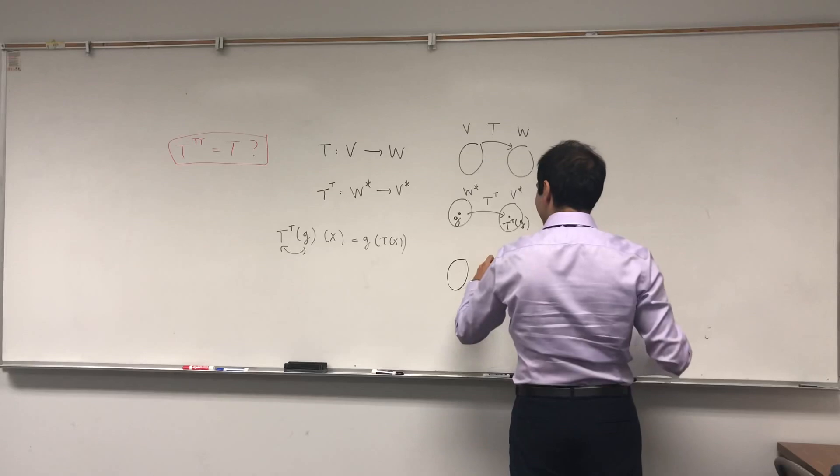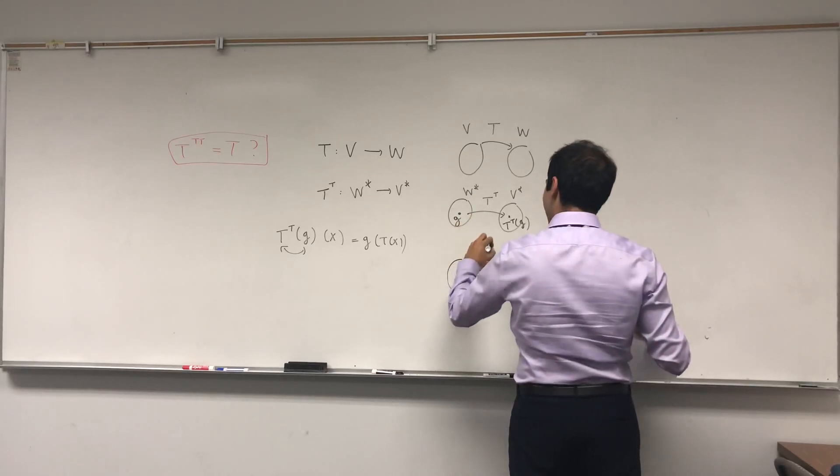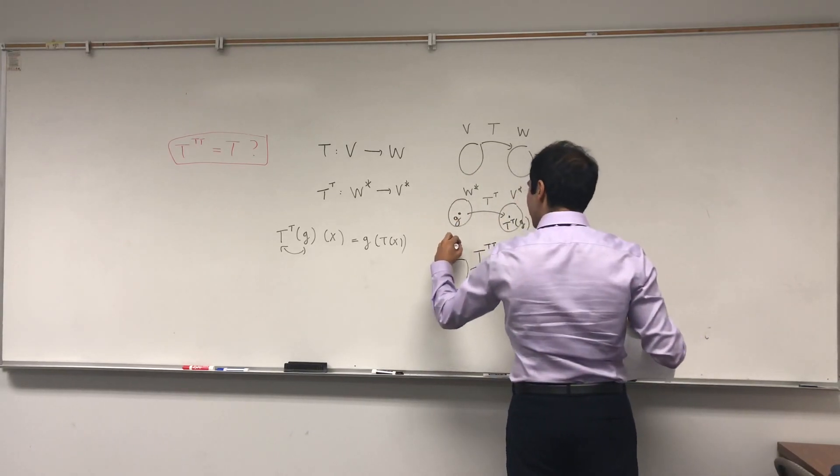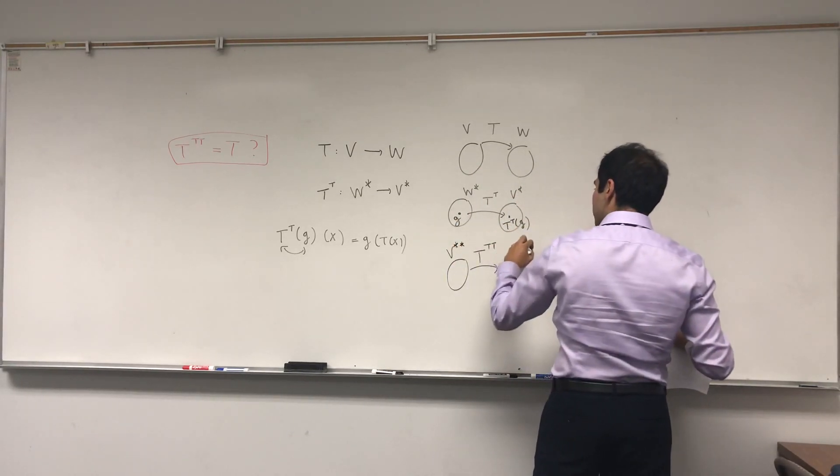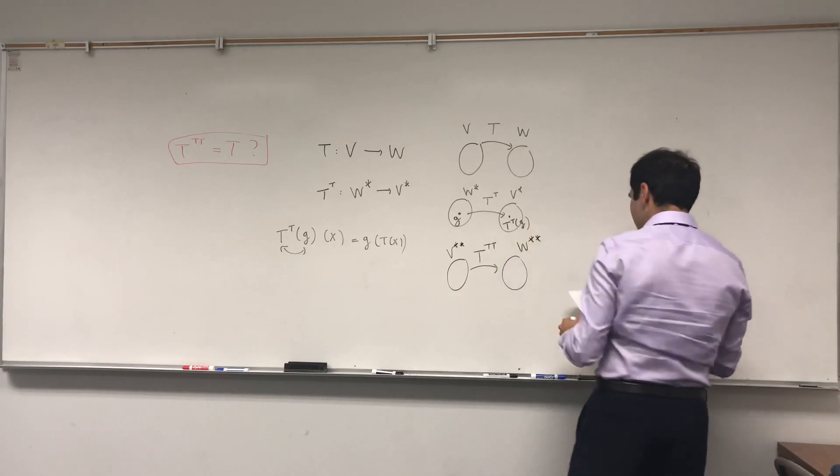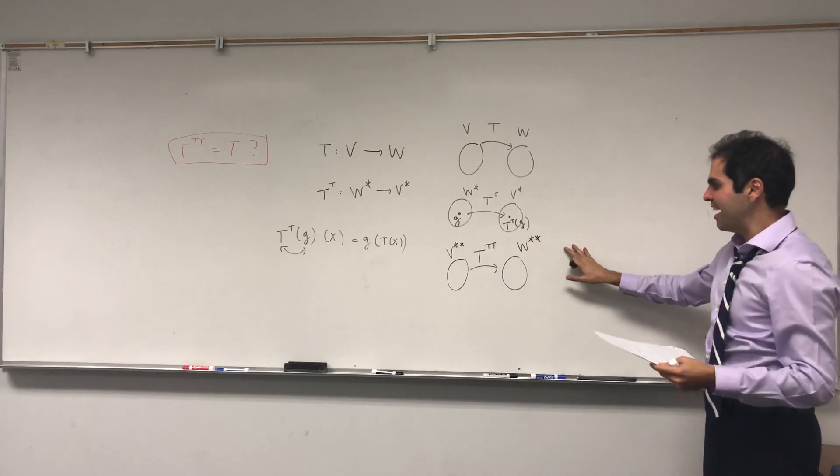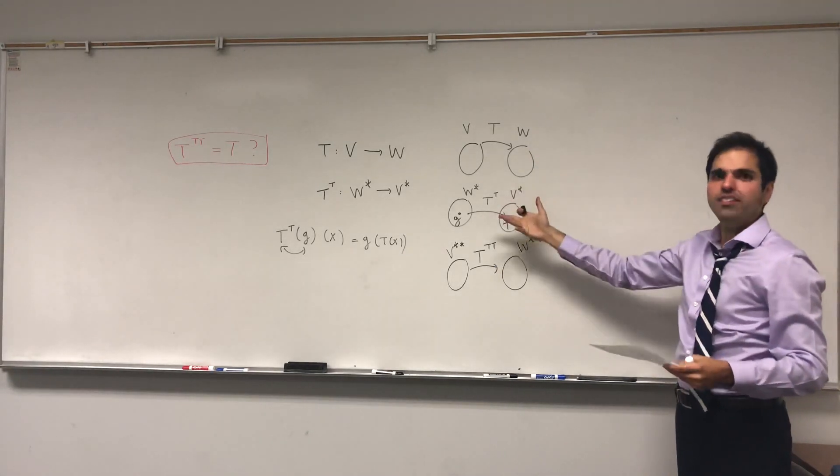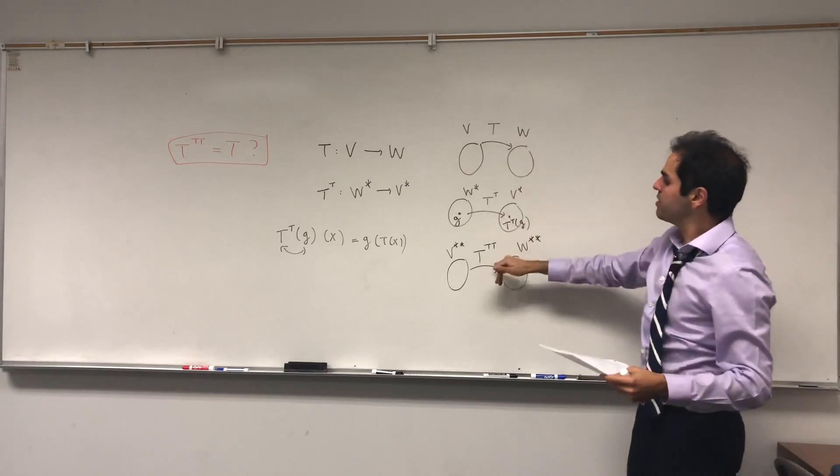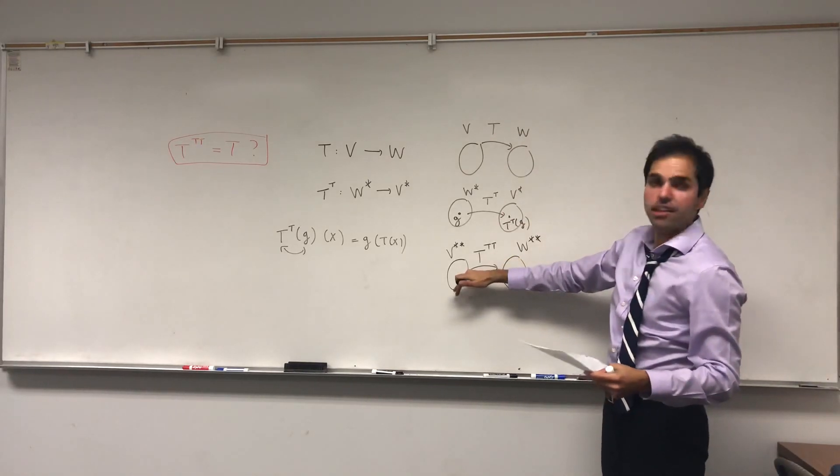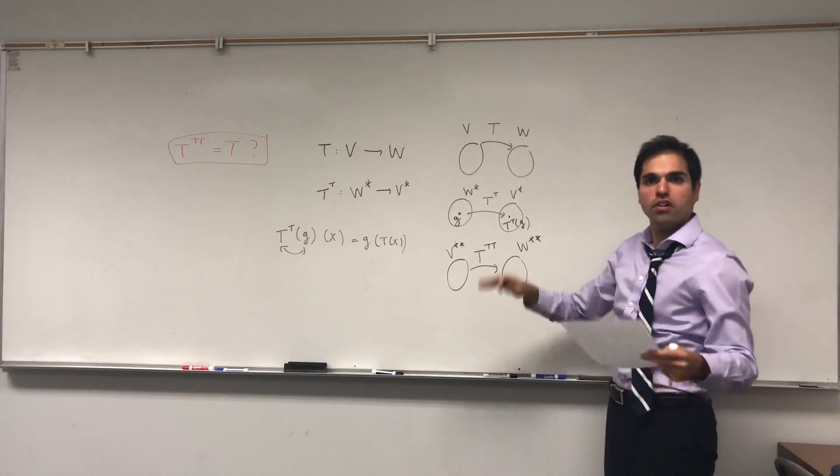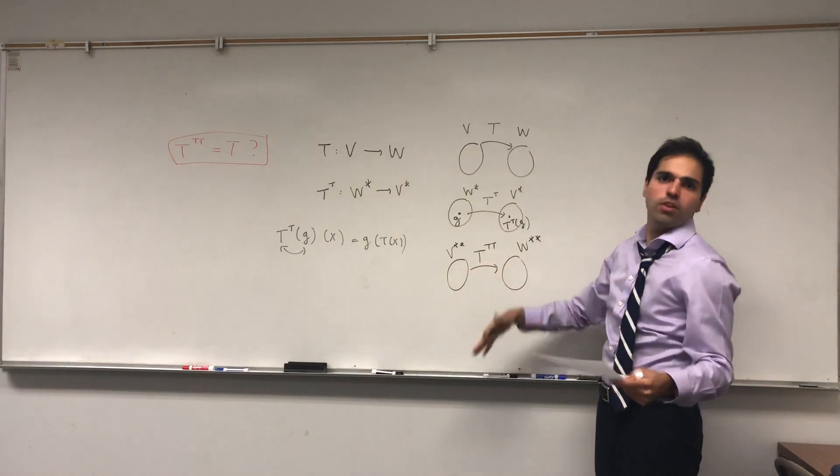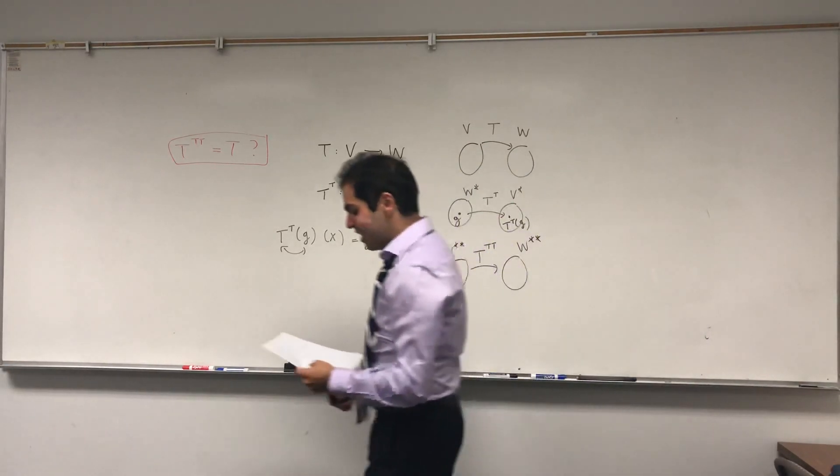Since T transpose goes from W star to V star, T transpose transpose goes from V star star to W star star. So already we can see that T transpose transpose cannot possibly equal T because it's a function from a different domain. V and V double star are different spaces. This is spaces of vectors, this is spaces of superfunctionals.